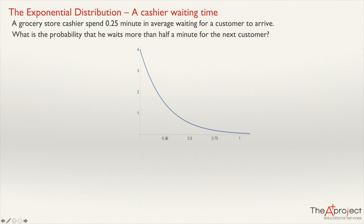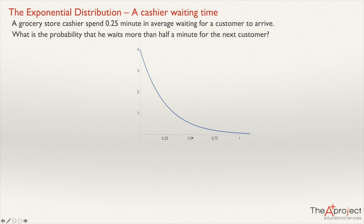Why not? If the average is 0.25, it's still possible that the waiting time could be one minute. Maybe there will even be some customers that arrive after 1.1 or even 2 minutes. There is no reason to say that is impossible. Obviously, the farther we go from the mean, the smaller the probability will be.